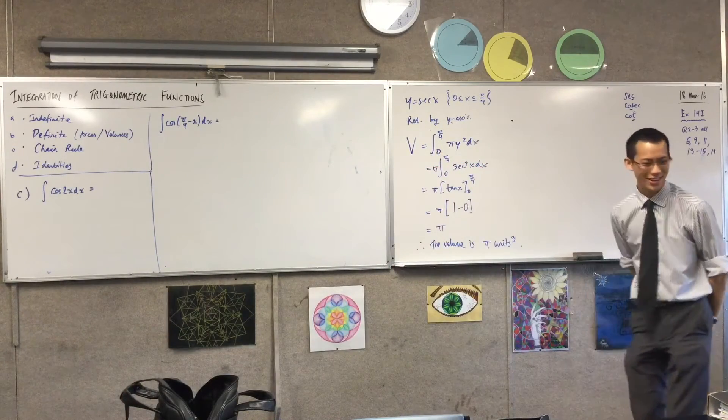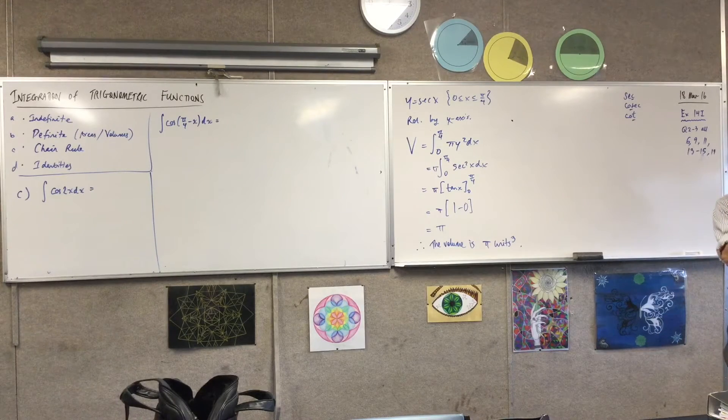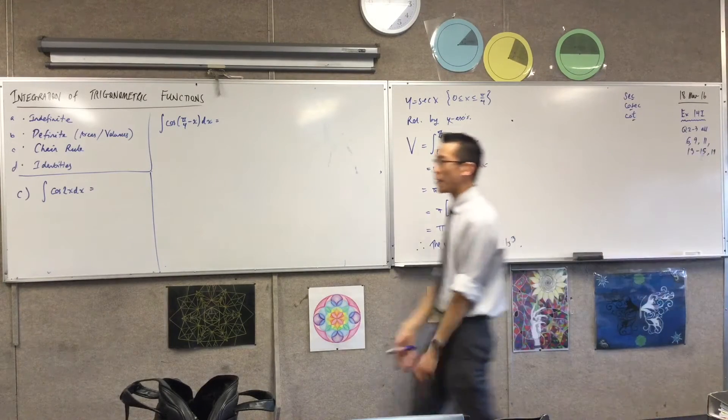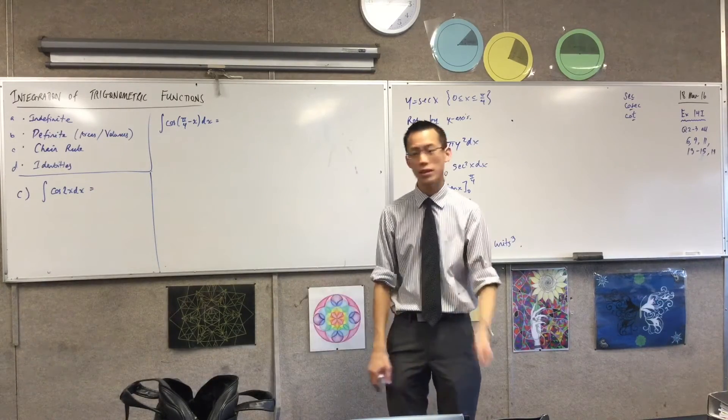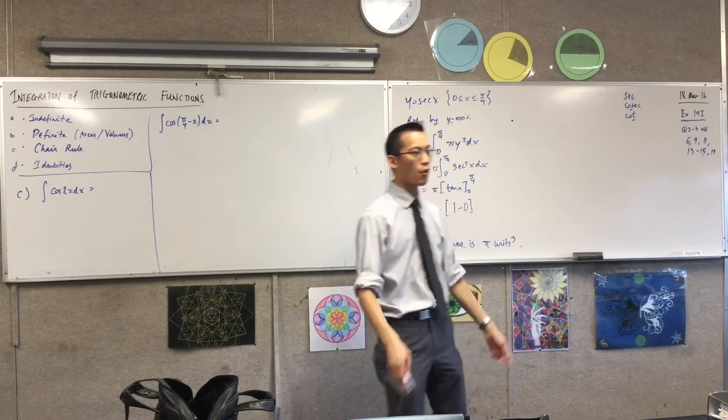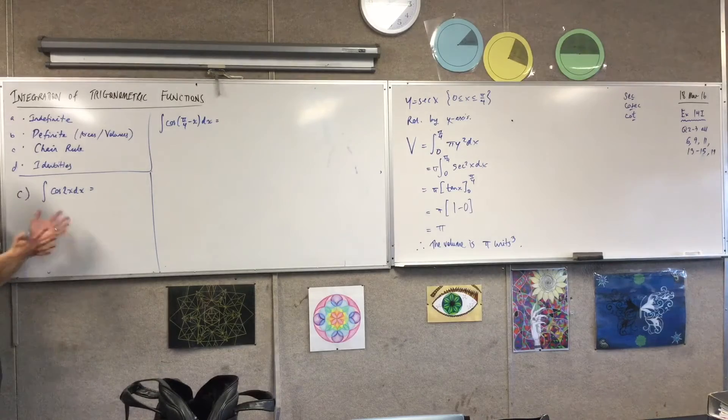Indefinite. Definite. Sorry. We're going to do chain rule and identity. And you'll see they flow together quite neatly. Here we go. The integral of cos 2x. Now, again, just like I did with the indefinite integrals, I'm going to write this in such a way to take advantage of the fact that I know my derivatives really well.